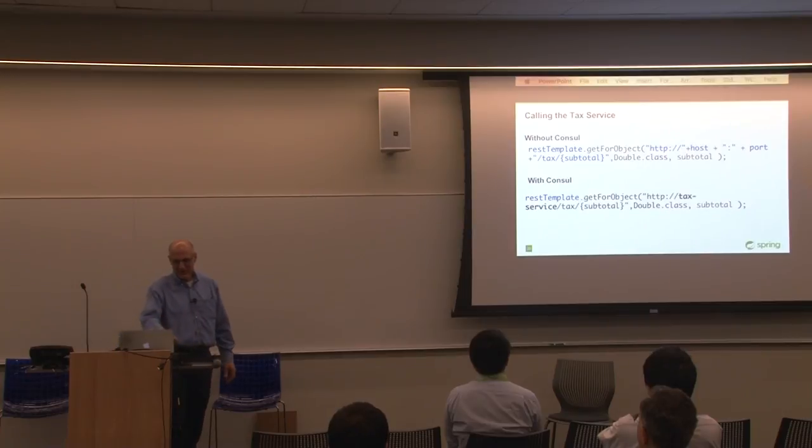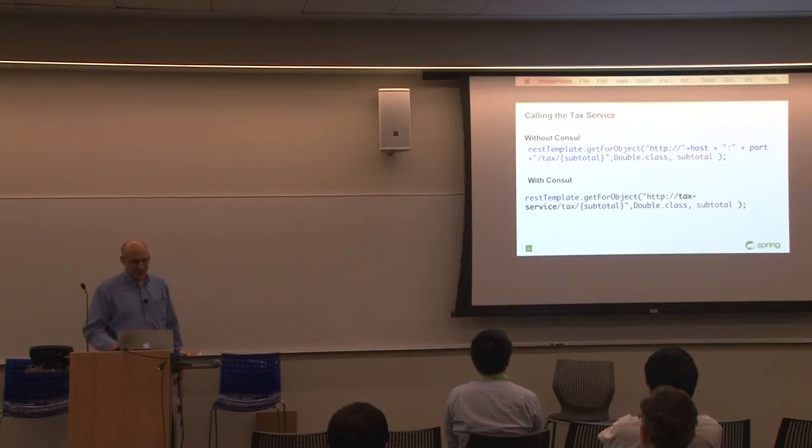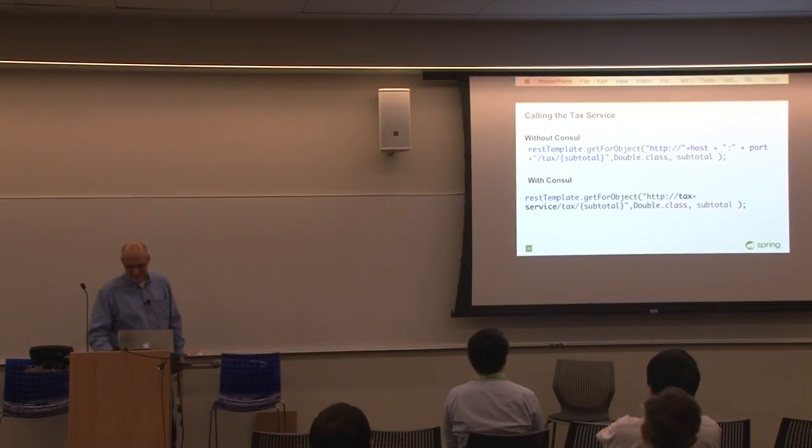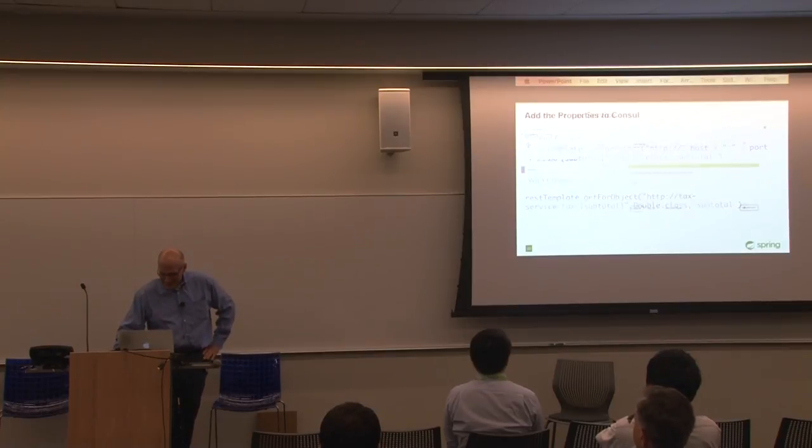This is how I would call that RESTful service before without Consul. I would have a REST template and I would put the host and the port and then the URL and what I'm expecting back and I can pass my parameters, right? We've all done that. Here, I'm actually putting the name of the service and that's it. Now I'm going to be able to resolve to the service. If it fails, I will fail over to another service. If that's not there, I will get an error saying tax service is not available. And I'm a big fan of clear error messages, especially in the middle of the night when someone's calling you up.